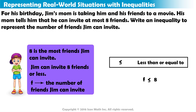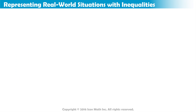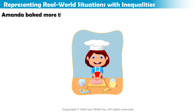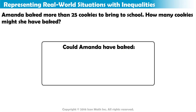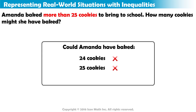Great work! Let's try another example. Amanda baked more than 25 cookies to bring to school. How many cookies might she have baked? Could Amanda have baked 24 cookies? No. What about 25 cookies? No again. She baked more than 25 cookies.